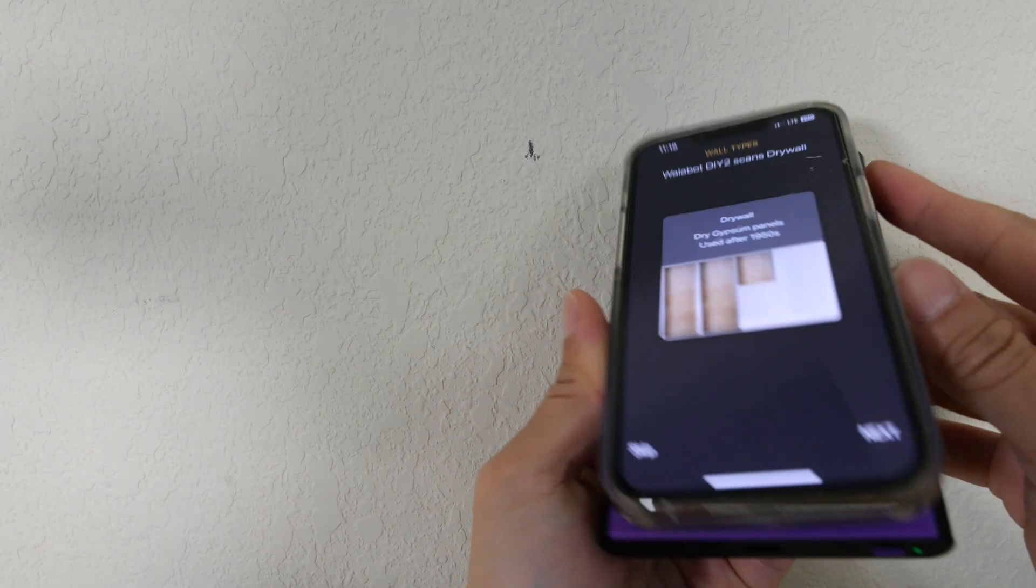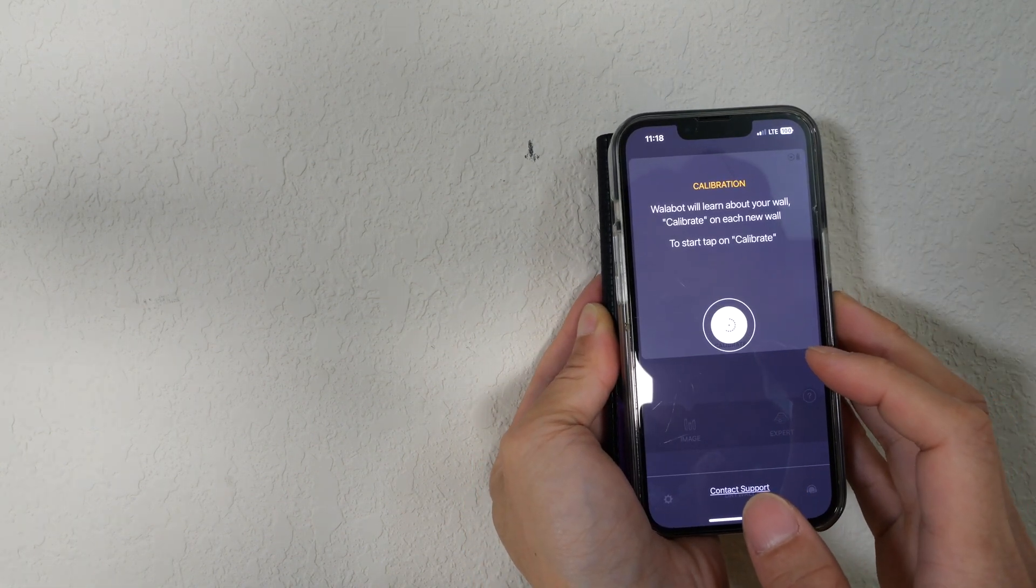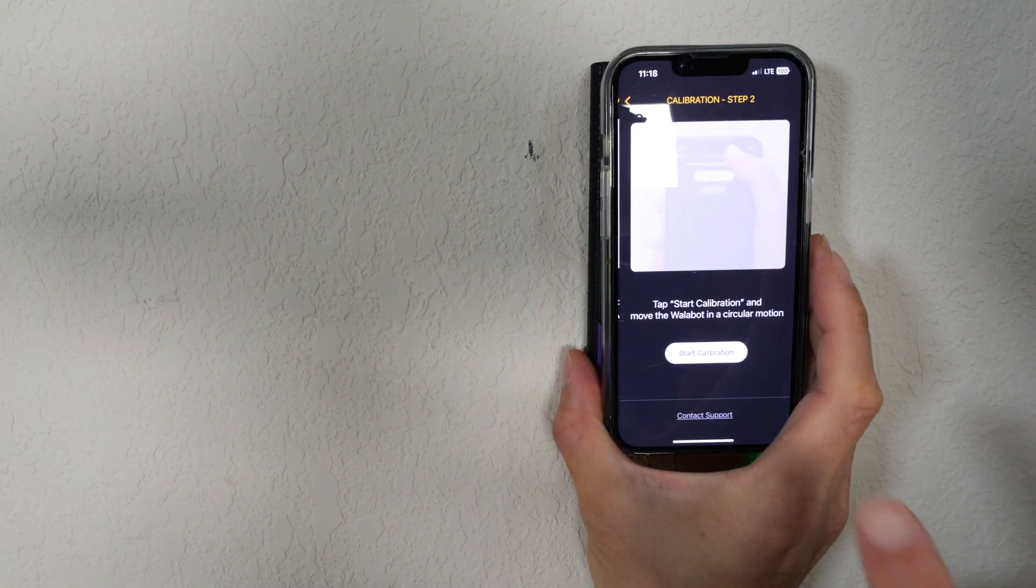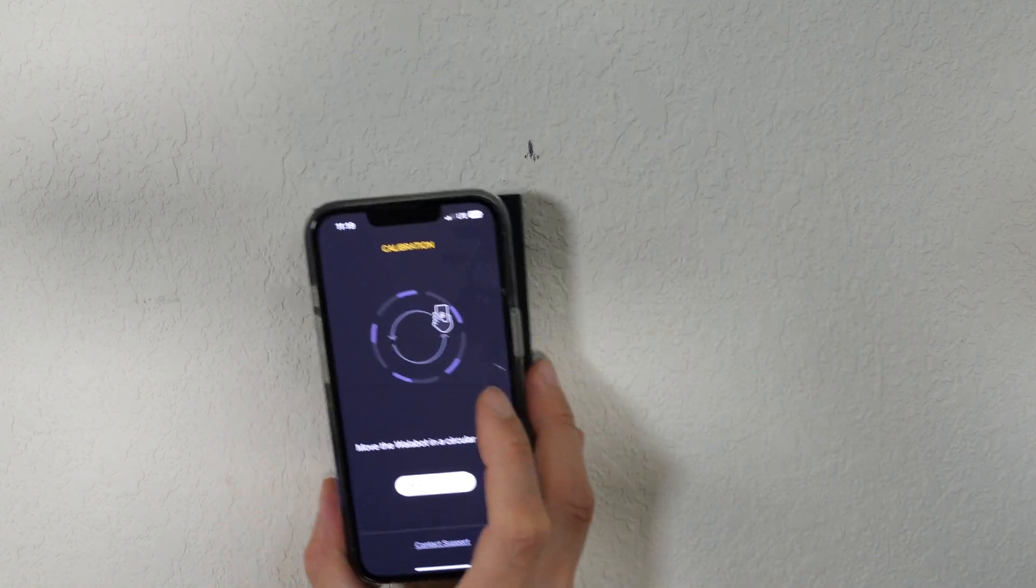For the Wallabot, I need to turn it on, reconnect it to Wi-Fi, and we need to calibrate this device for each new wall that we're doing. So let's click this, and then we click next step, start calibration, and then we just kind of roll it around.